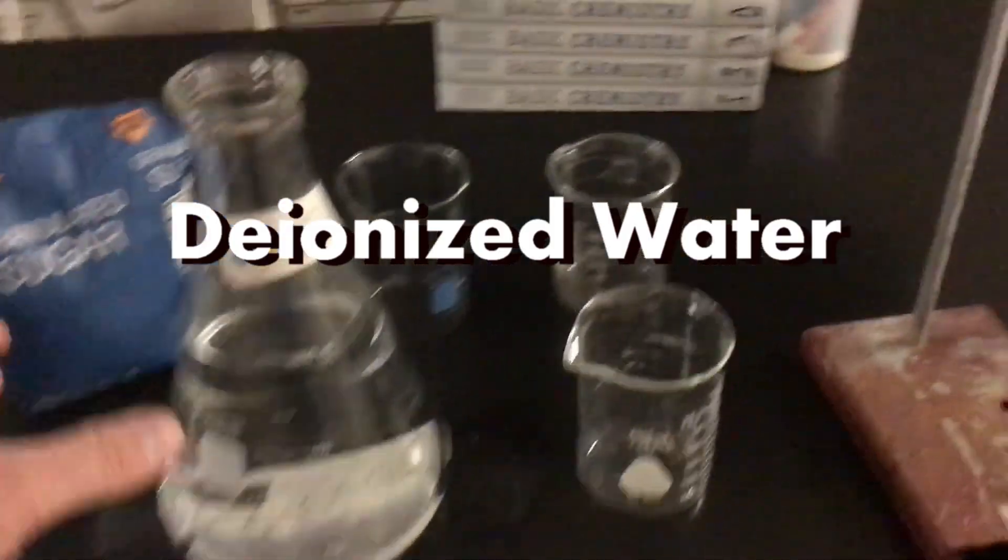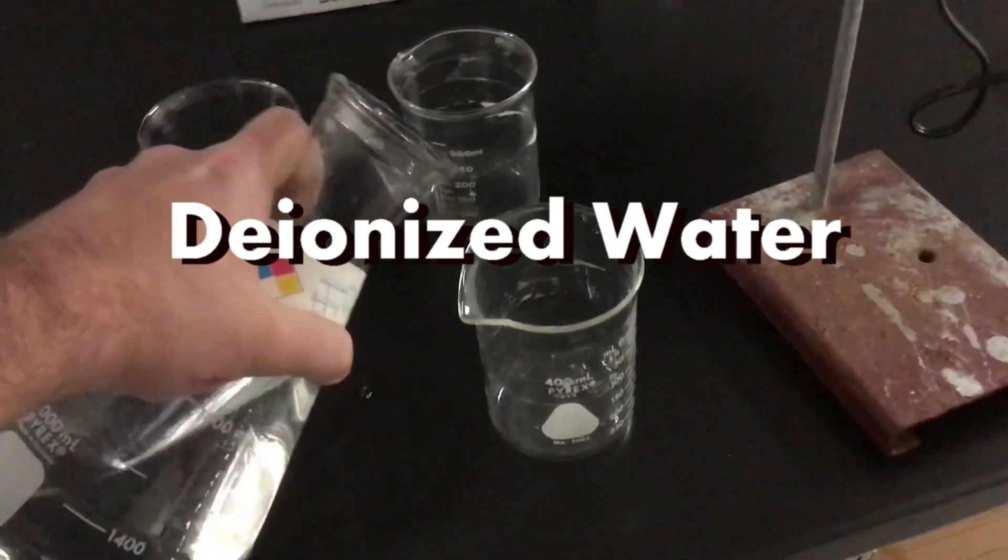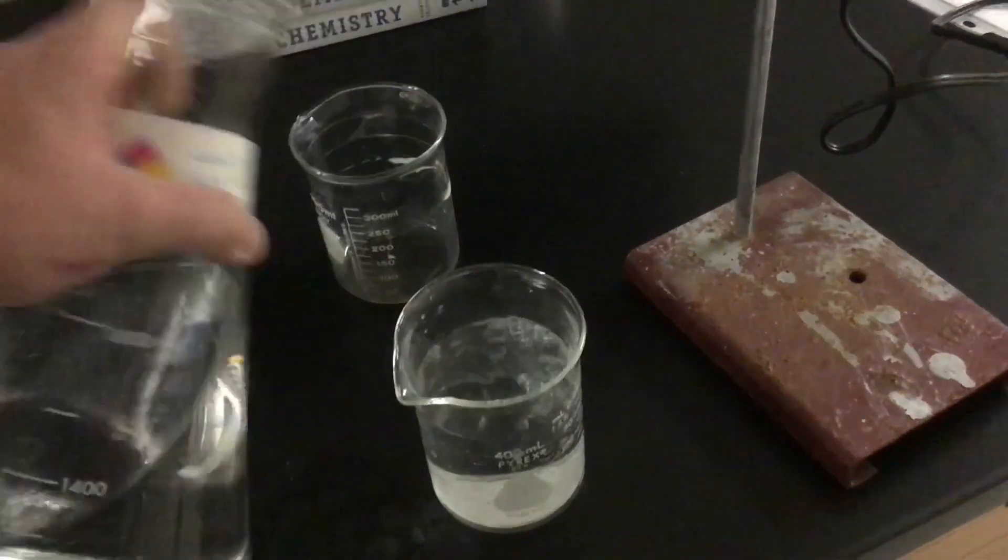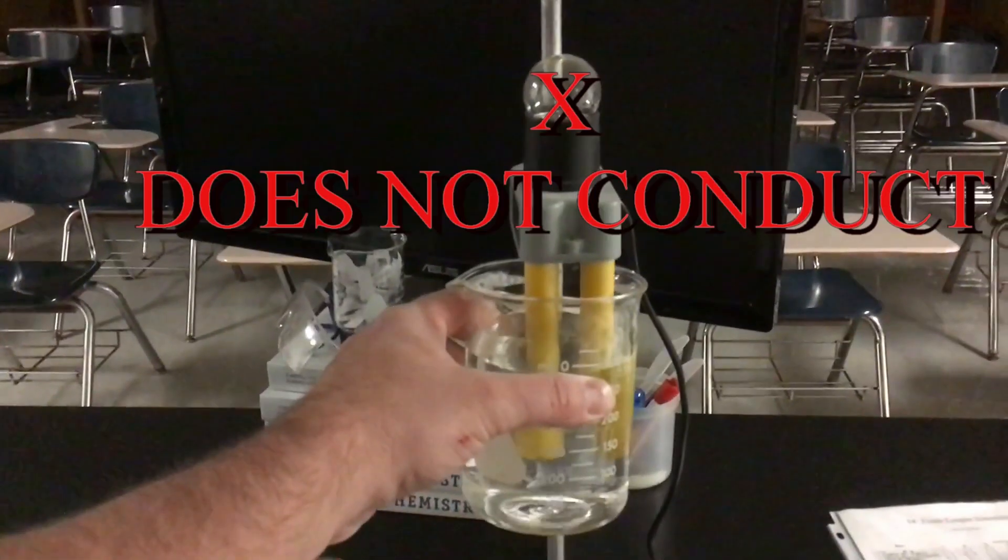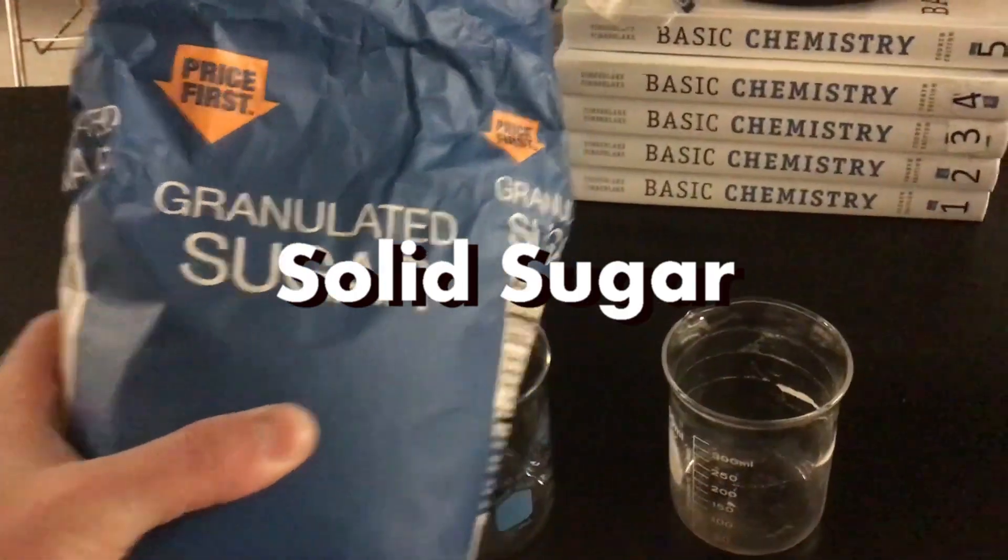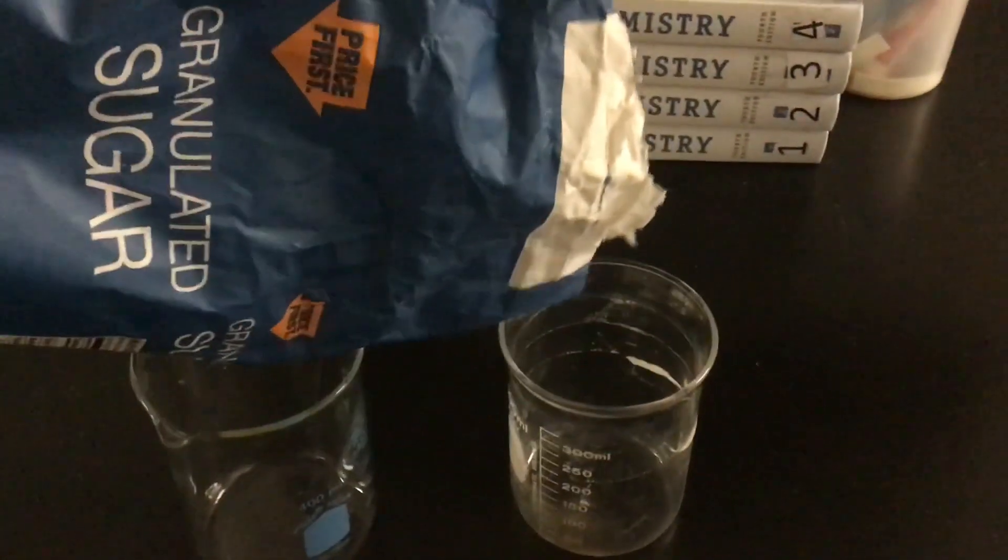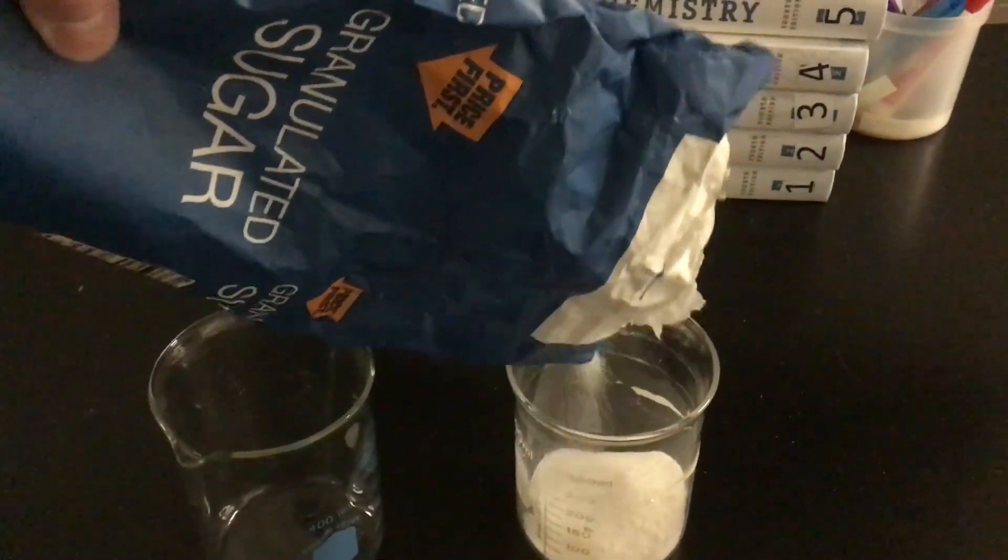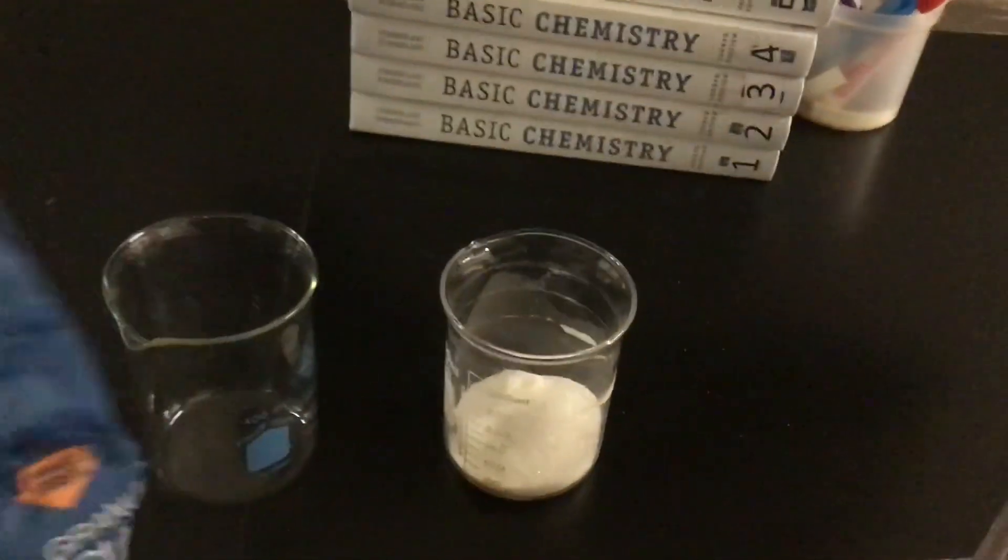We're going to take that deionized water, pour it into a beaker, lift it up against the probes and see if it conducts electricity. It does not. Moving on, we're going to try solid sugar. I'll pour some solid sugar in a beaker until it gets high enough to touch those probes and we'll see if solid sugar can conduct electricity.